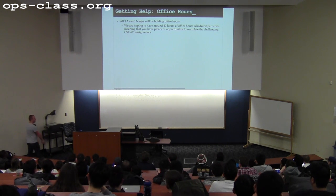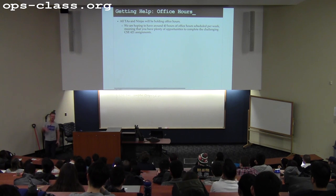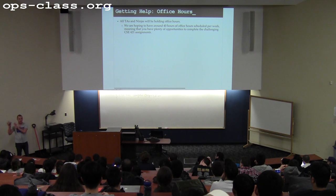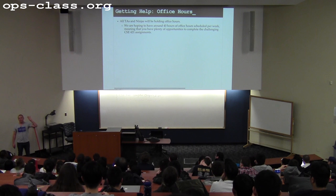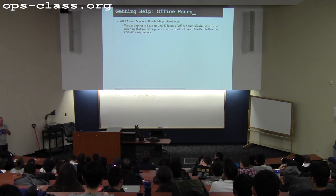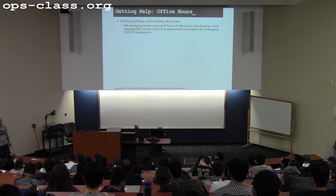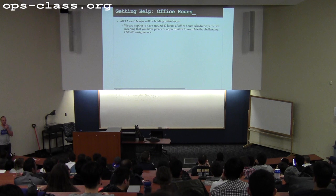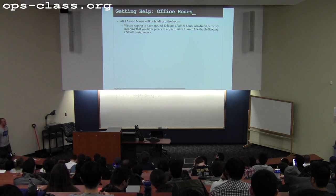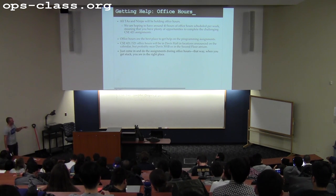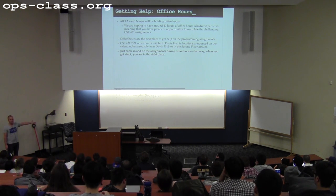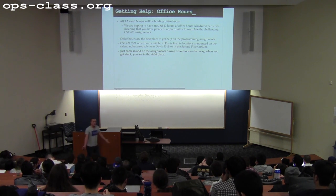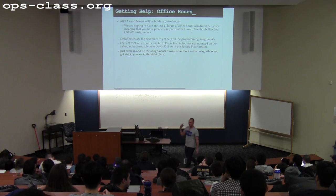Office hours is really the place where we try to provide as much help as possible. My contract for the class is: I'm going to give you a lot of work to do, but I'm also trying to give you as much help as possible. That's why all the students in my group are involved, and why I've pulled favors from these awesome ninjas to come back and help. Last year I think we had about 40 hours of office hours a week. My suggestion is to just do the assignments in office hours — come hang out in my lab or the hallway. You don't need to have a question; you'll get stuck and then you're in the right spot.